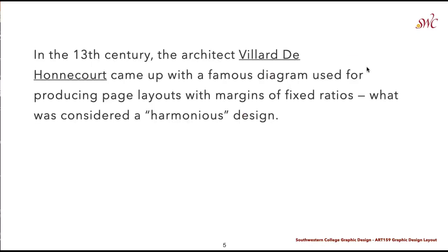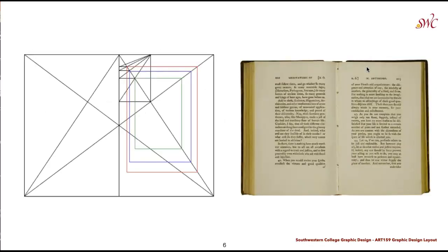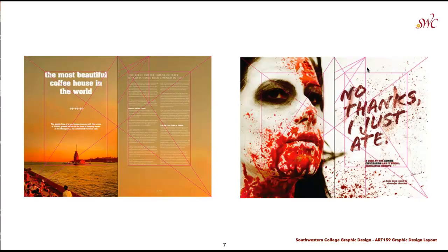In the 13th century, the architect Villard de Hanacourt came up with a famous diagram used for producing page layouts with margins of fixed ratios. These were considered harmonious designs. This diagram determined the proportions of books from the Renaissance through present time, and we can see it being used within more modern designs today.